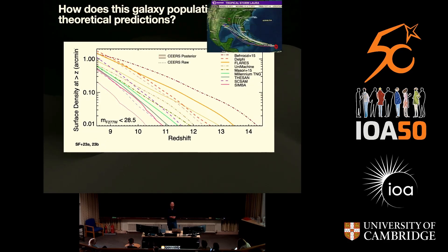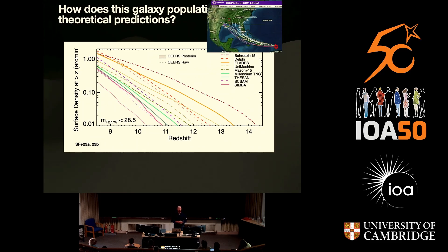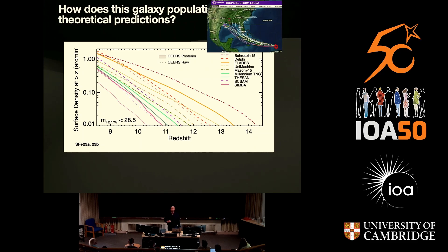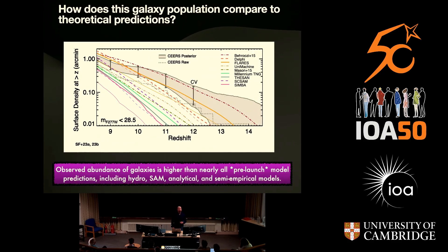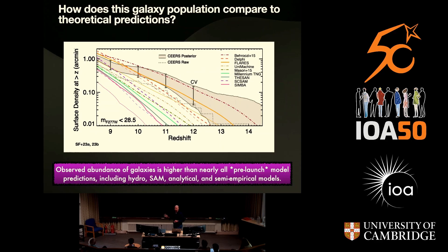We want to understand how this galaxy population compares to theoretical predictions. Showing the number of galaxies at redshift greater than Z — a cumulative redshift plot giving surface density in galaxies per unit area on the sky — each curve is a different pre-launch model. Before anyone got to look at the redshift-greater-than-10 universe, theorists thought a lot of things; it's like a hurricane spaghetti diagram — predictions were all over the map. When we get observations, the gray swath shows what we observe, and we're finding lots of galaxies at the high end of all theoretical predictions. This is now coming out in most JWST high-redshift surveys: we're finding more galaxies than expected from theoretical models pre-launch.